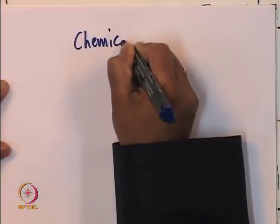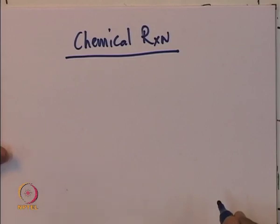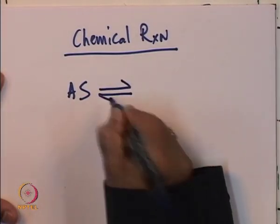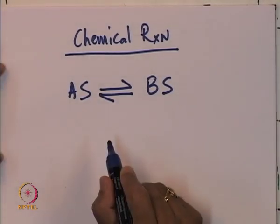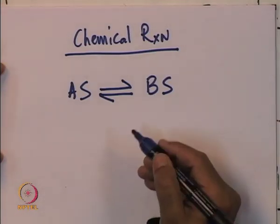After understanding how adsorption takes place, let us talk about the surface reaction. We will revisit adsorption later when we derive the rate law — right now I am explaining the individual steps. The chemical reaction on the surface: the adsorbed species A·S is going to get transformed to B·S. Let us understand what rate this reaction has and what it depends on.